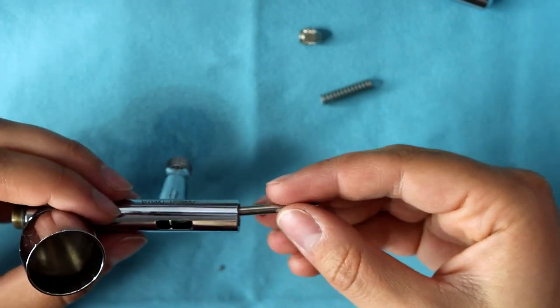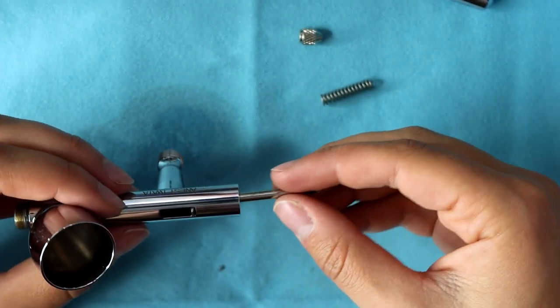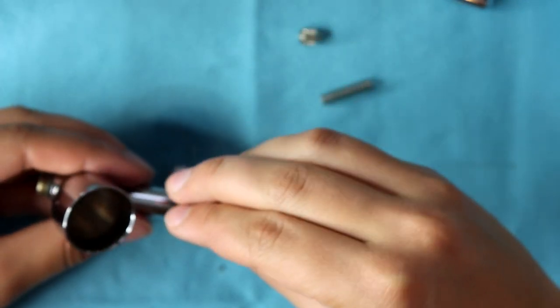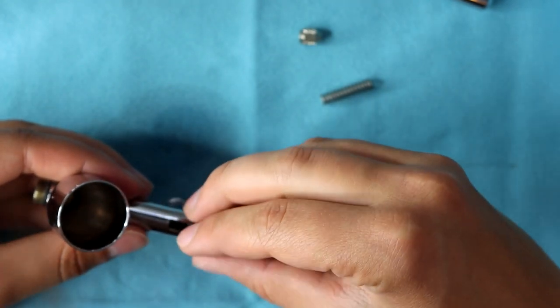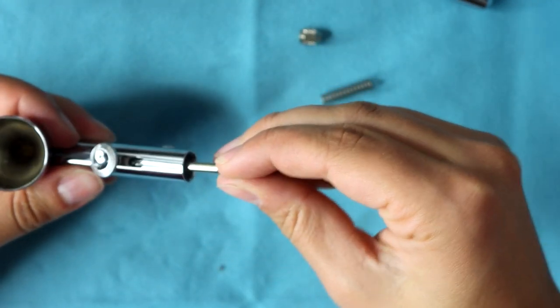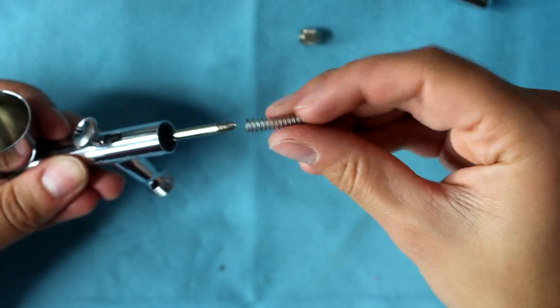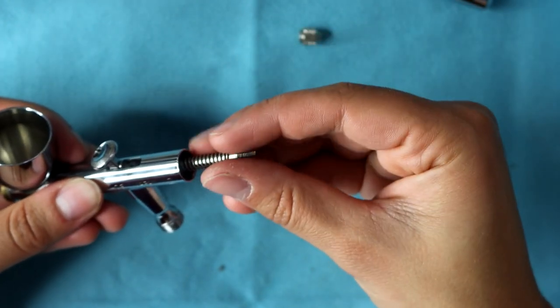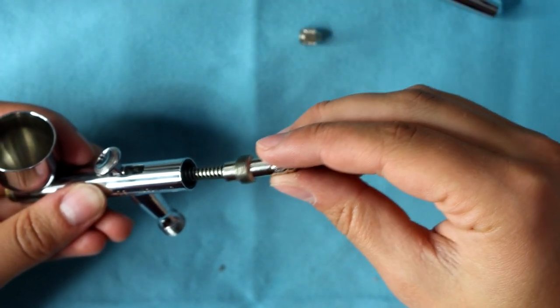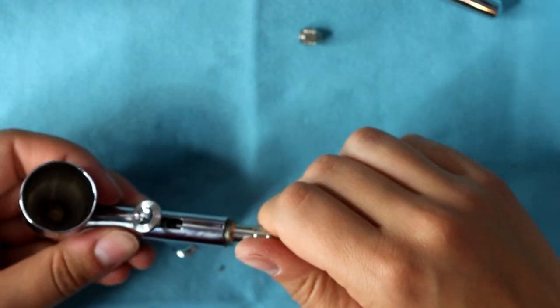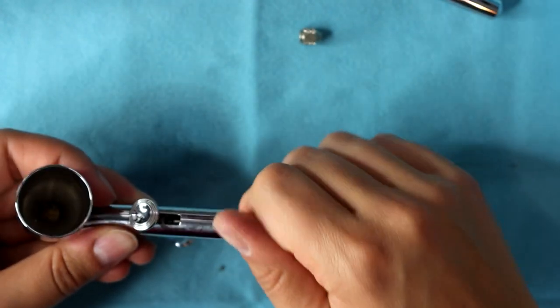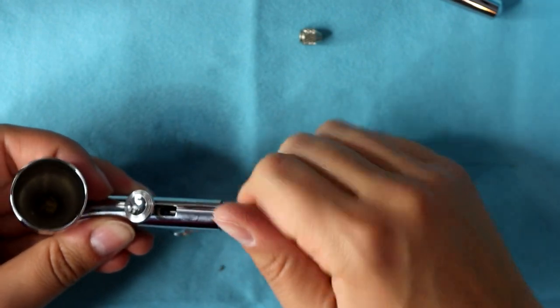Then I will put the trigger keeper back inside the brush and drop that trigger inside. It's hard sometimes to line it up, but it should fit into that little hole. The spring goes inside. The large screw piece goes over top of that and screws in. This has quite a few threads on it, so it takes a second to screw all the way in.